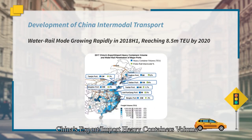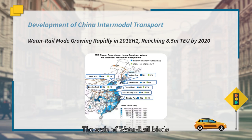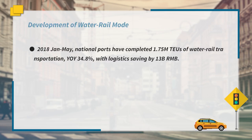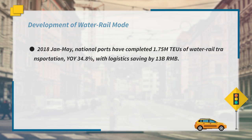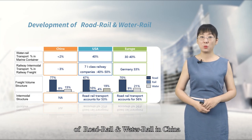The figure shows China's export and import heavy container volume and water-rail penetration at major ports. In 2017, China's intermodal transport developed rapidly. The scale of water-rail mode grew rapidly in 2018 and would reach 8.5 mTEU by 2020. From January to May 2018, national ports completed 1.75 mTEU of water-rail transportation. Optimistically forecast, in 2020, China's container water-rail transport market demand is 8.5 mTEU. The figure shows the development of road-rail and water-rail intermodal transport in China.